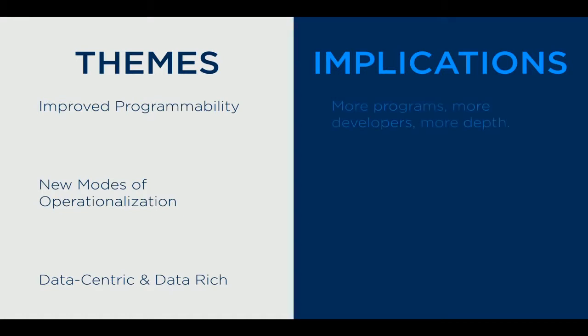The implications of these themes are: improved programmability means more people can program more easily, leading to more developers and more applications — more breadth and depth. New modes of operationalization means more deployments, more complex environments whether it's Lambda, other AWS services, other cloud providers, or on-prem — many more degrees of freedom. And lastly, we're going to have a lot more data, with more applications depending on more kinds of data, and those dependencies becoming significantly more complex.